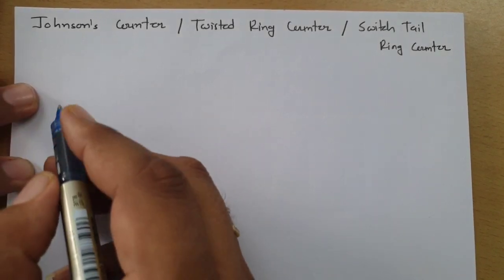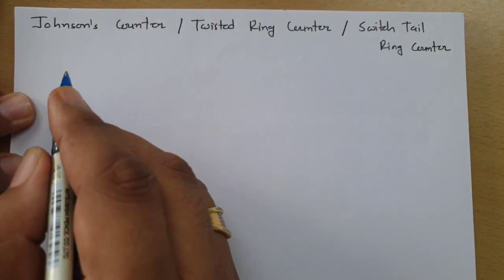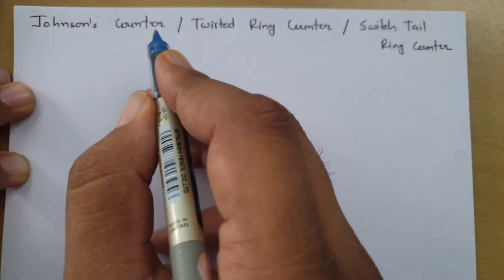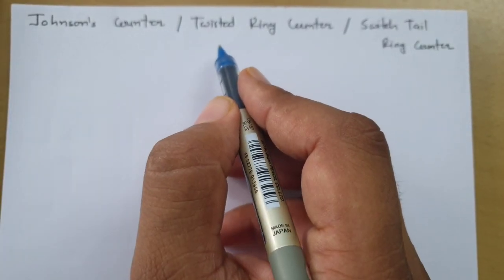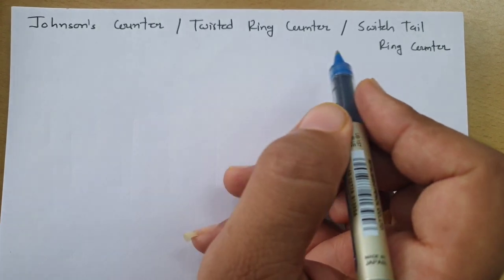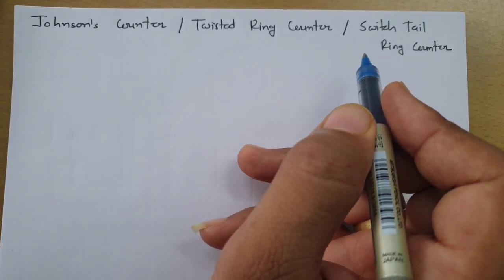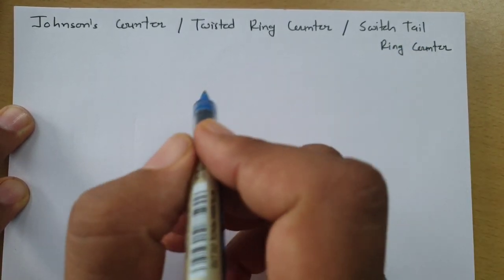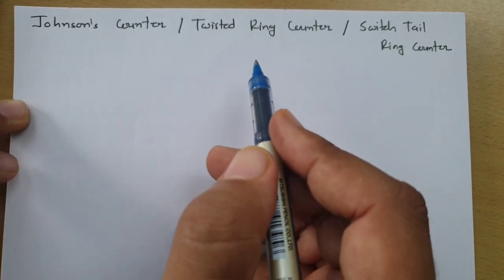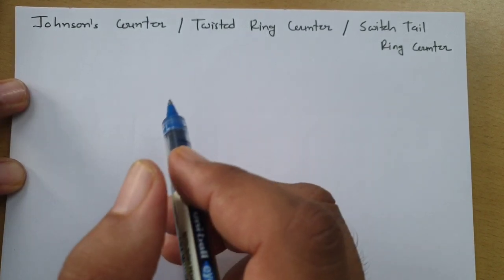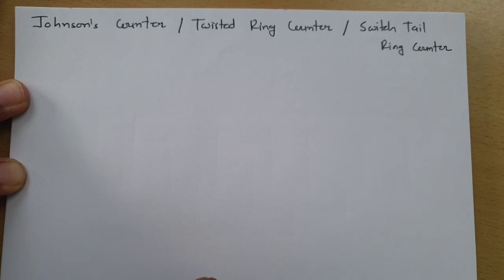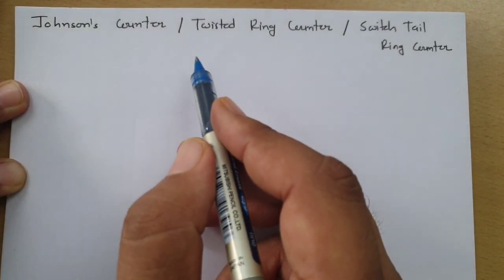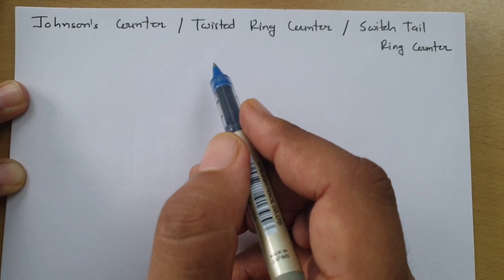Welcome to digital electronics lecture series. Professor Ritesh Dholakya is going to explain Johnson's counter, also referred to as twisted ring counter and switched tail ring counter. This is an upgraded version of the ring counter seen in the previous video, and the advantages of Johnson's counter will also be explained here.